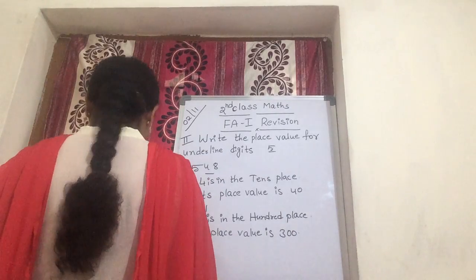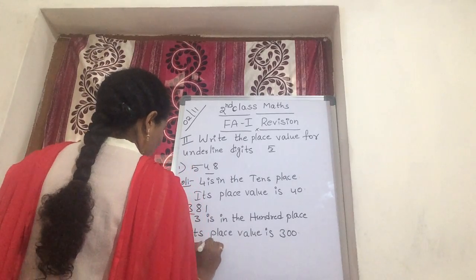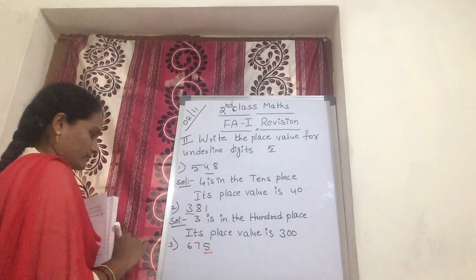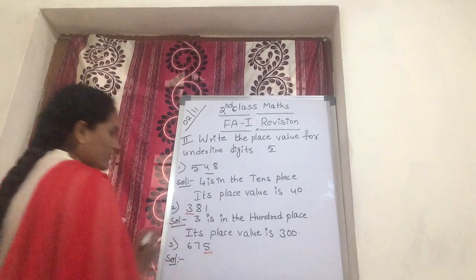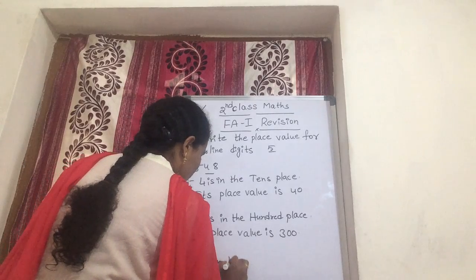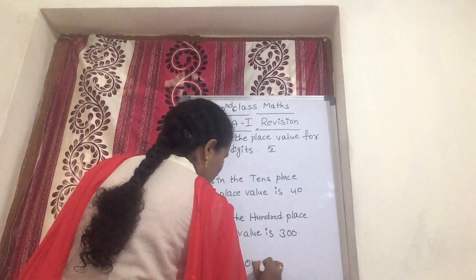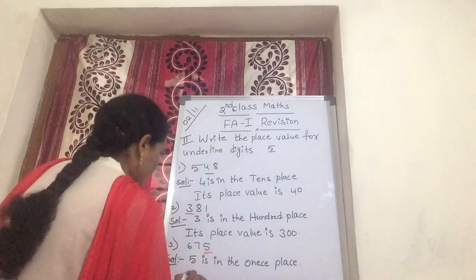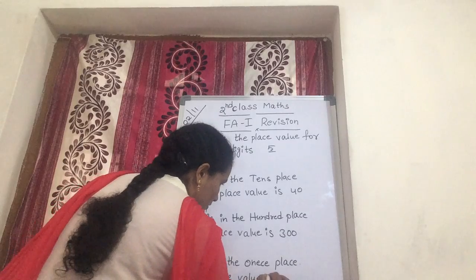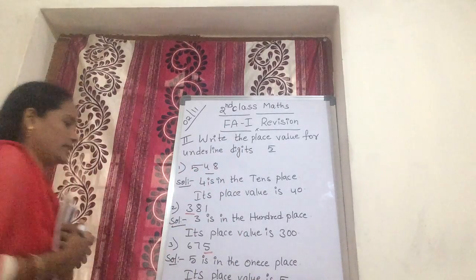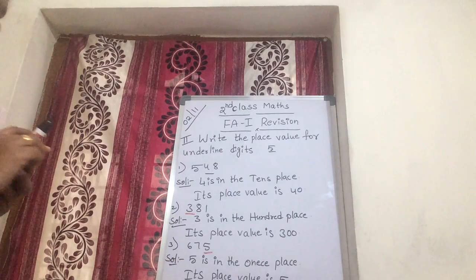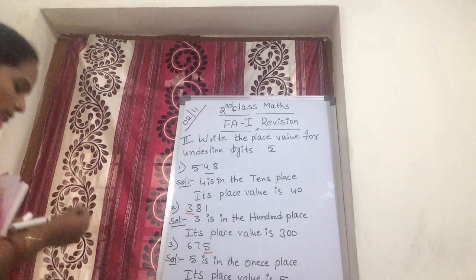Now one more: 675, underline on 5. Solution: 5 is in the ones place. So its place value is 5. Children, write it down.